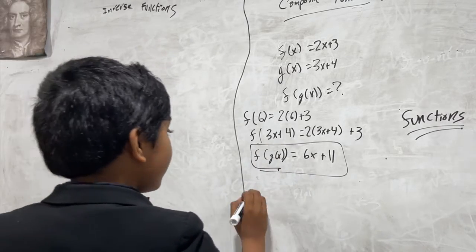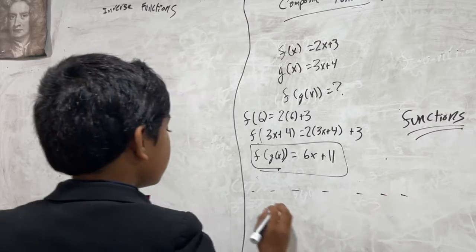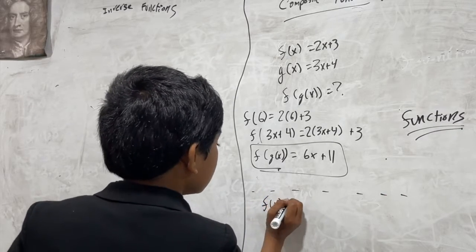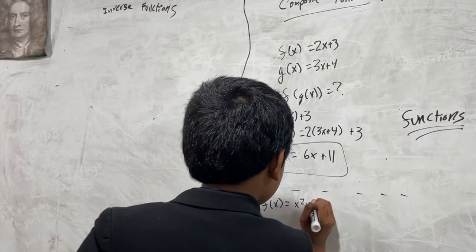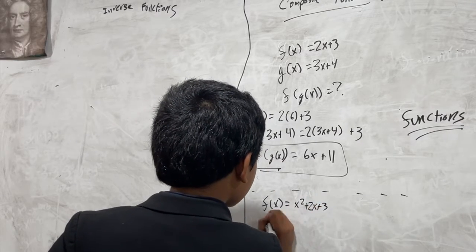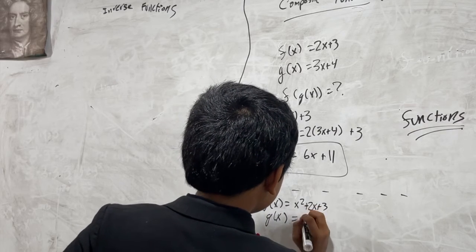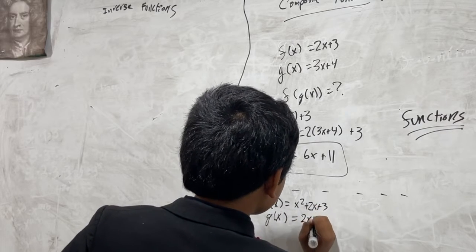That's a composite function. These composite functions can be tricky sometimes. For example, let's say we have f(x) = x² + 2x + 3 and g(x) = 2x + 1.